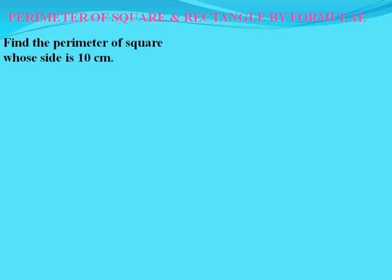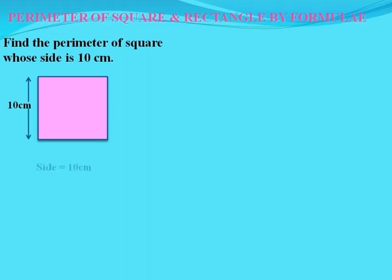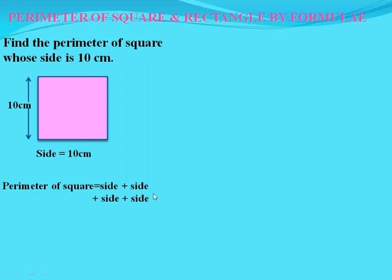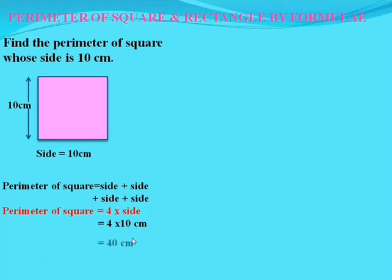Perimeter of square and rectangle by formulae. Find the perimeter of a square whose side is 10 cm. The perimeter of a square equals side + side + side + side — the sum of all sides — which we can write as: Perimeter of Square = 4 × side. So 4 × 10 cm = 40 cm.